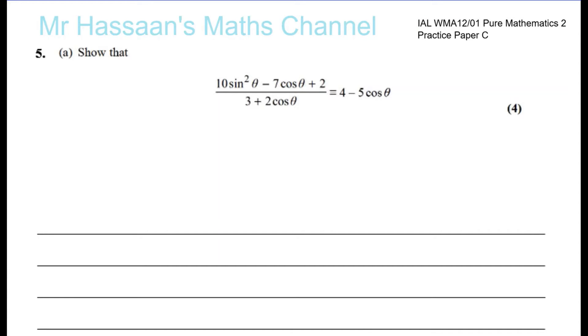Here we have question number five from practice paper C. Show that 10sin²θ - 7cosθ + 2 over 3 + 2cosθ is equal to 4 - 5cosθ. So we've got to show that this becomes that. This is the left hand side and this is the right hand side, and we've got to prove that this becomes that. Now of course it's easier to go this way than to go that way.